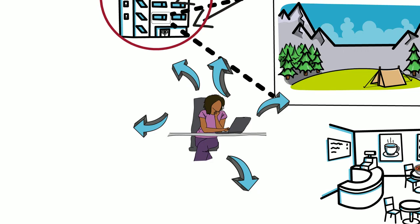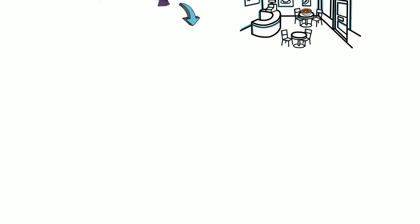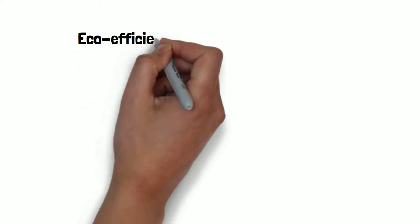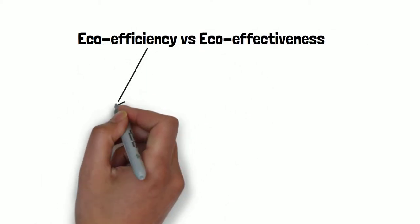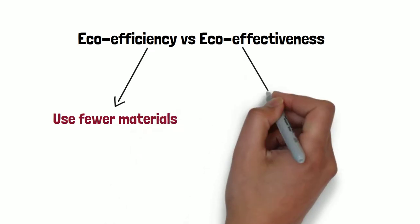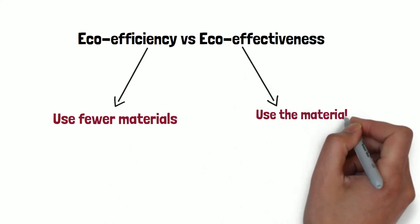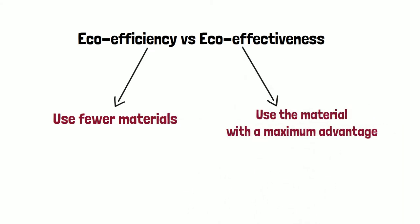So in the long run, it's always more beneficial. These buildings represent only the beginnings of eco-effective design and this is the difference between eco-efficiency and eco-effectiveness. Eco-efficiency tells us to use fewer materials but eco-effectiveness tells us to use the material with the maximum advantage so that we have benefits in the long run.